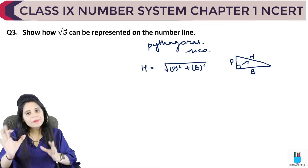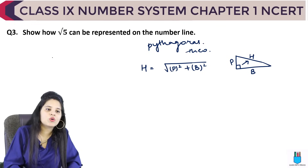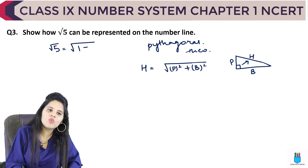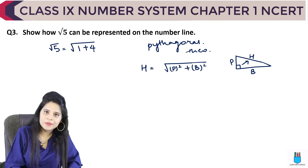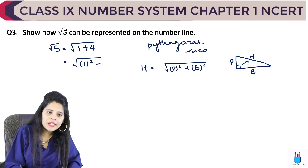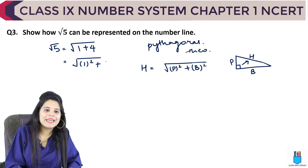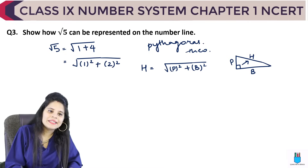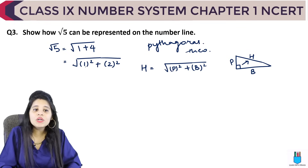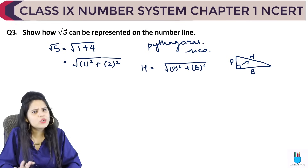Now we will solve this question. I have √5, which I can write as √(1 + 4). I can write this as √(1² + 2²). So my perpendicular is 1 and my base is 2.